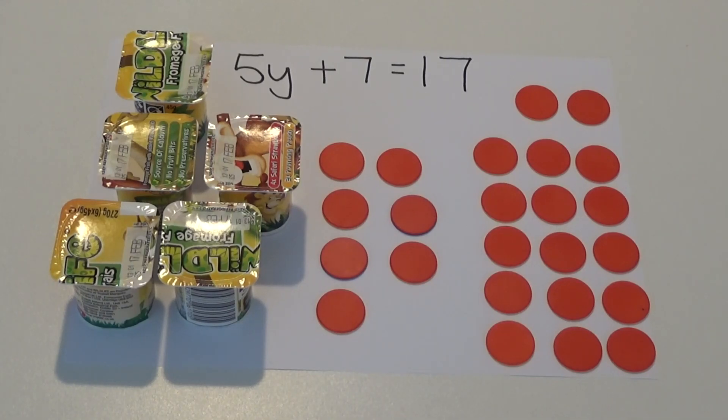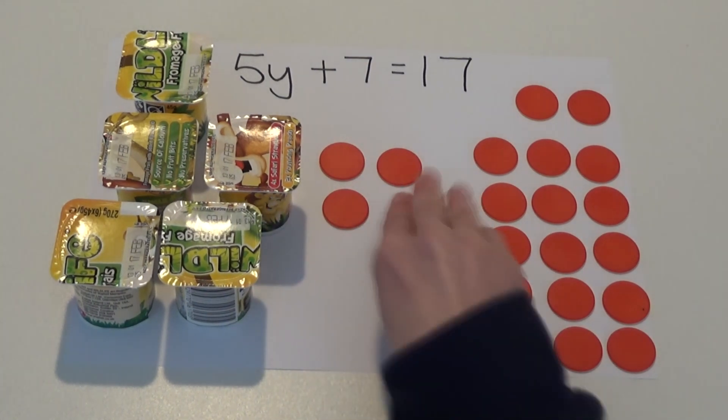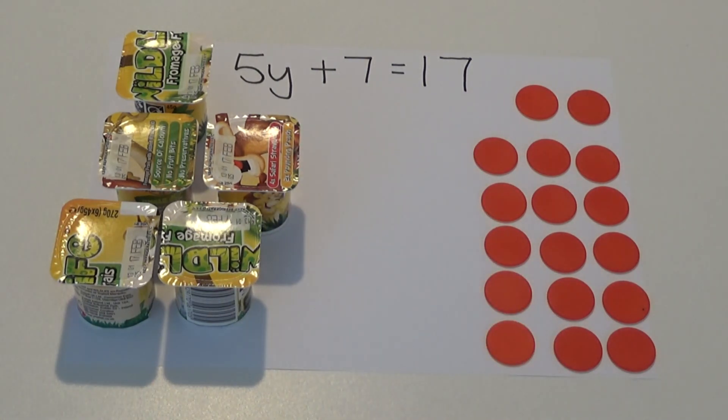To do this, we need to take the 7 counters on the left side away. To make sure both sides are equal, we also need to take 7 counters away from the other side.